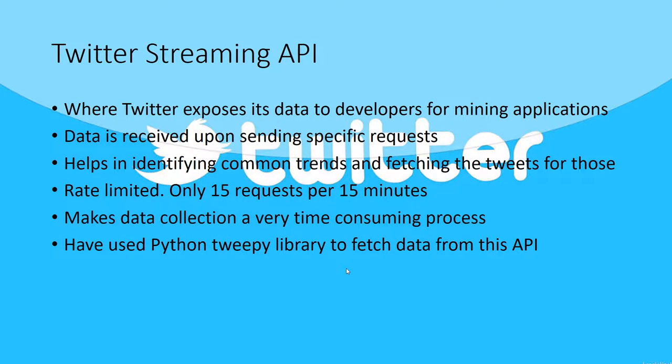The Twitter streaming API is where Twitter exposes data to developers for mining and research purposes — we send specific requests to get the data. The problem is that the Twitter streaming API is rate limited, meaning it can only service a limited number of requests per unit time, which makes data collection a very time-consuming process. We have used the Twitter Python TP library to fetch data from this API, written in Python, and we store the fetched data into an ARFF file which can be used as input to the classifier.